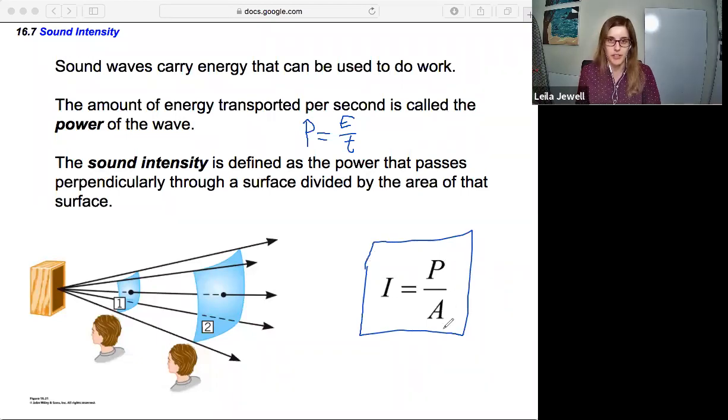So intensity is written with an I, equal to power divided by area, I = P/A. Notice the units of intensity are those of power divided by area. The units of power are watts, and the units of area in SI units are square meters. So these are SI units of intensity: watts per meter squared.